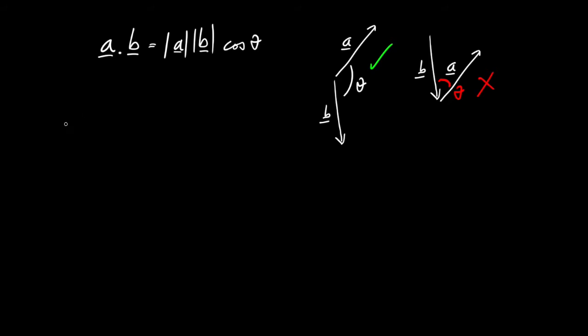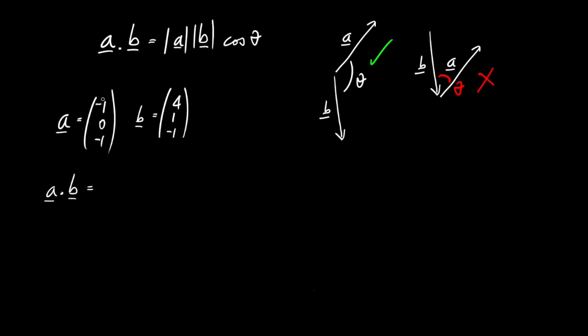Let's work out the angle between a couple of vectors. We'll make a be -1, 0, -1, and b will be 4, 1, -1. First we'll work out the dot product. We have -4 from -1 times 4, we have 0 times 1 is 0, and we have -1 times -1 is 1. So it's going to be -3 for the total dot product between these two.